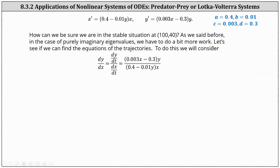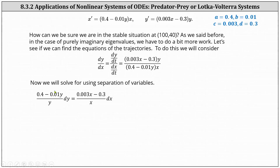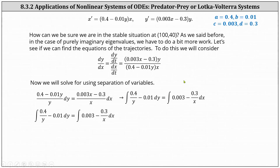Let's see if we can find the equations of the trajectories. To do this, we will consider dy/dx. We have dy/dx equals (dy/dt) divided by (dx/dt), resulting in the following quotient. We can solve this differential equation using separation of variables. Separating the variables, the result is (0.4 minus 0.01y)/y dy equals (0.003x minus 0.3)/x dx. Integrating both sides, the result is 0.4 ln|y| minus 0.01y equals 0.003x minus 0.3 ln|x| plus C.